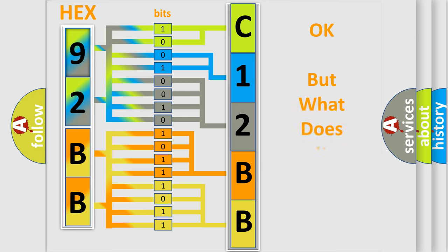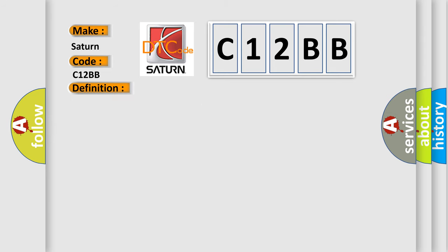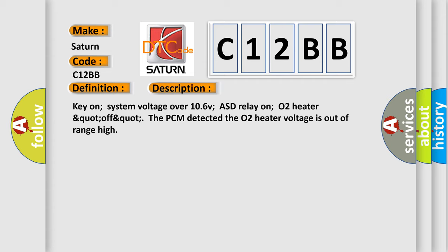The number itself does not make sense to us if we cannot assign information about what it actually expresses. So, what does the diagnostic trouble code C12BB interpret specifically for Saturn car manufacturers? The basic definition is O2B1S2 heater circuit high. And now this is a short description of this DTC code: Key on system voltage over 10.6V, ASD relay on, O2 heater off. The PCM detected the O2 heater voltage is out of range high.